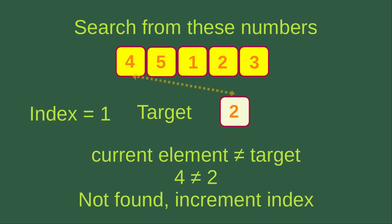The first thing is to set the index to one. Index one refers to the first element, which is four. I'm going to compare the first element, four, with the target, which is two. We see that the current element, four, is not equal to the target, two. So four is not equal to two, meaning the target is not found at this index.